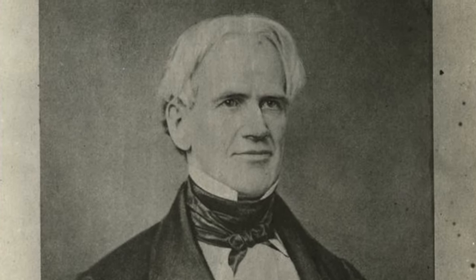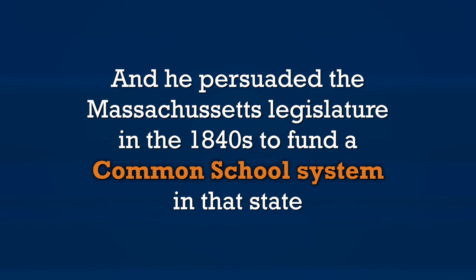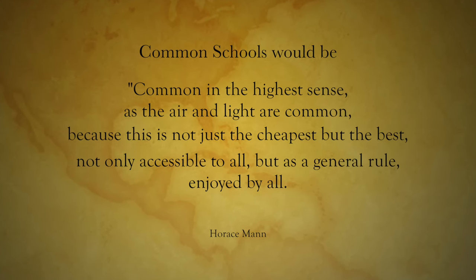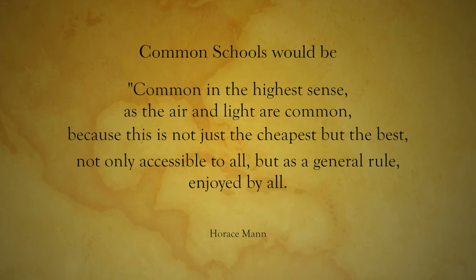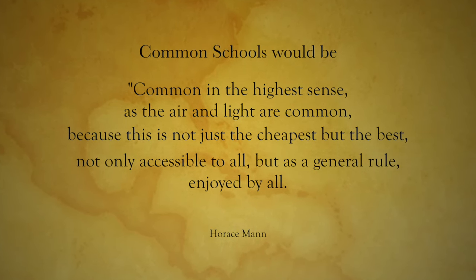Horace Mann, one of the founding fathers of the American educational system, saw this fragmented system and persuaded the Massachusetts legislature in the 1840s to fund a common school system in that state. He wanted to create an education system that was common in the highest sense — as the air and light were common — because it was not only the cheapest but the best, not only accessible to all but enjoyed by all. He wants both excellence and equality, and that's an ongoing theme and tension as we get the various layers of the American educational system.